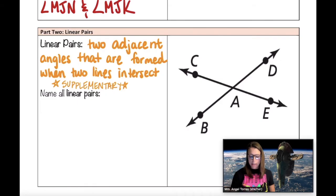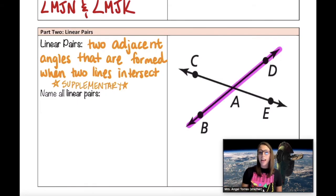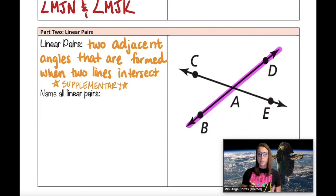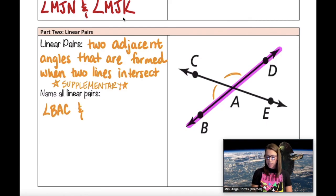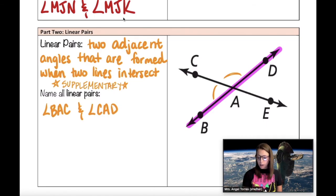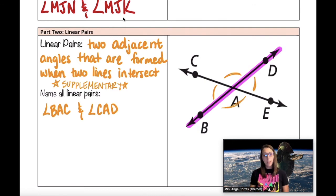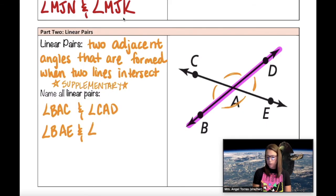Starting with line BAD, that line has two linear pairs. On the top left, angle BAC and angle CAD are a linear pair. On the bottom right, angle BAE is adjacent and supplementary to angle EAD — that is another linear pair: angle BAE and angle EAD.